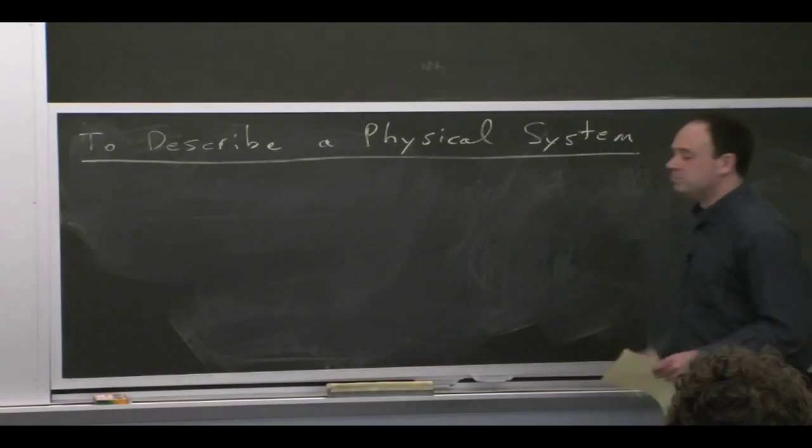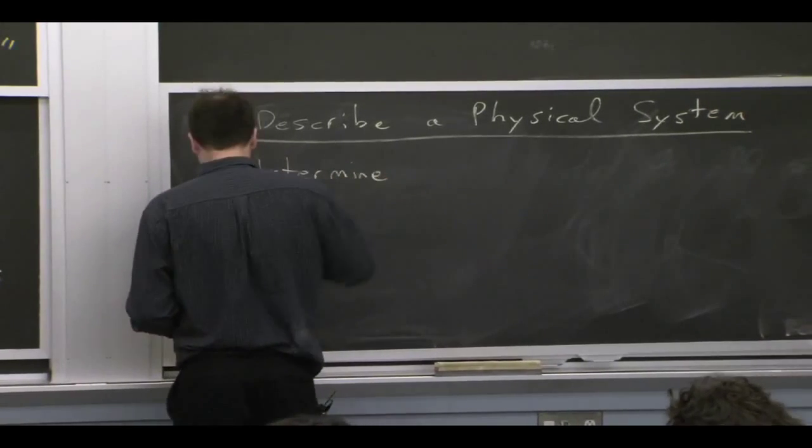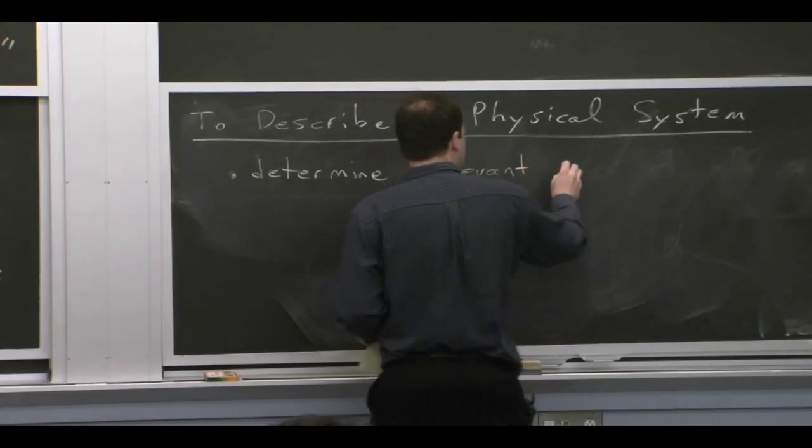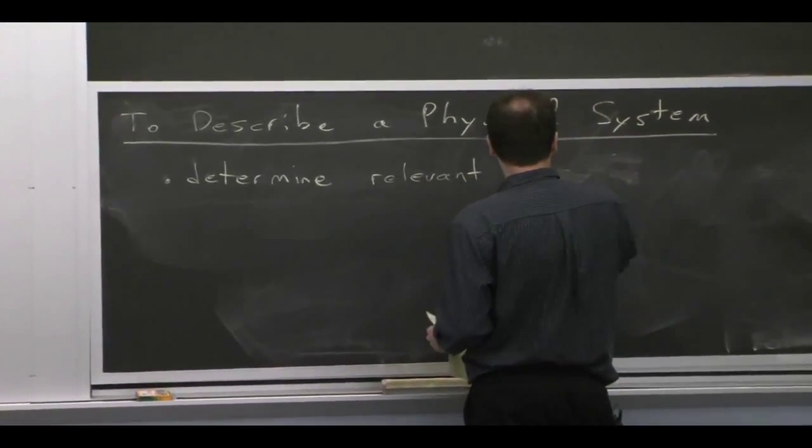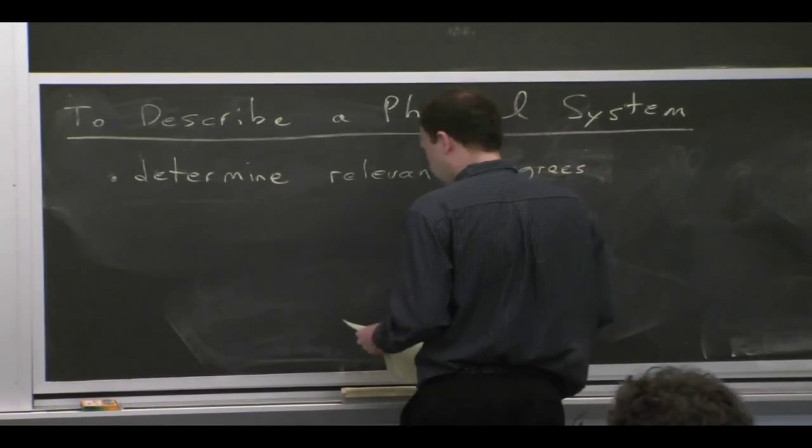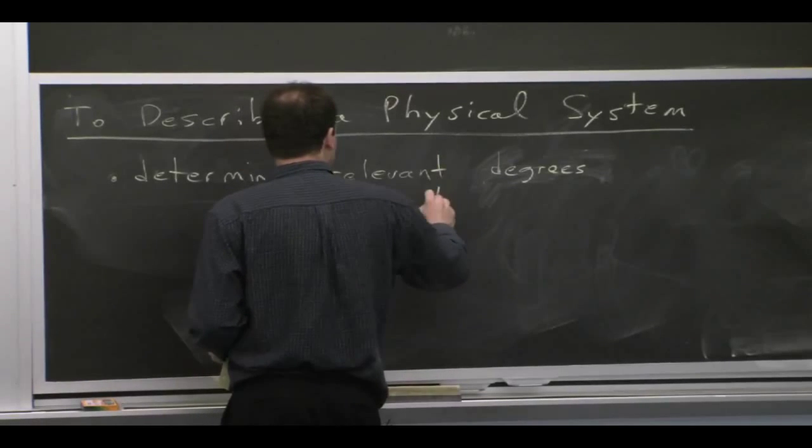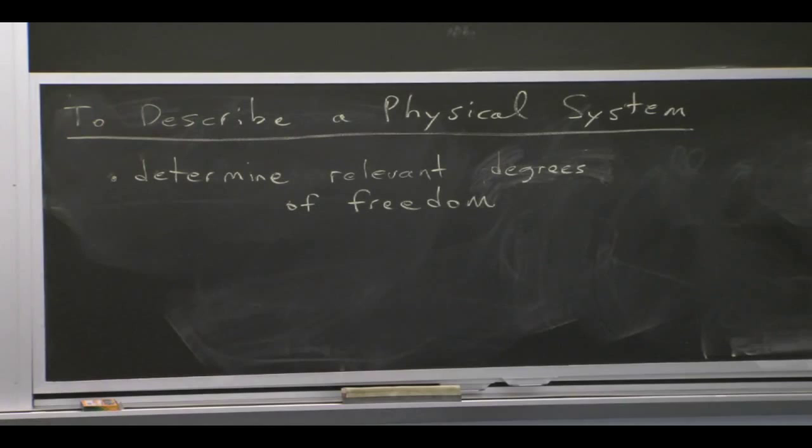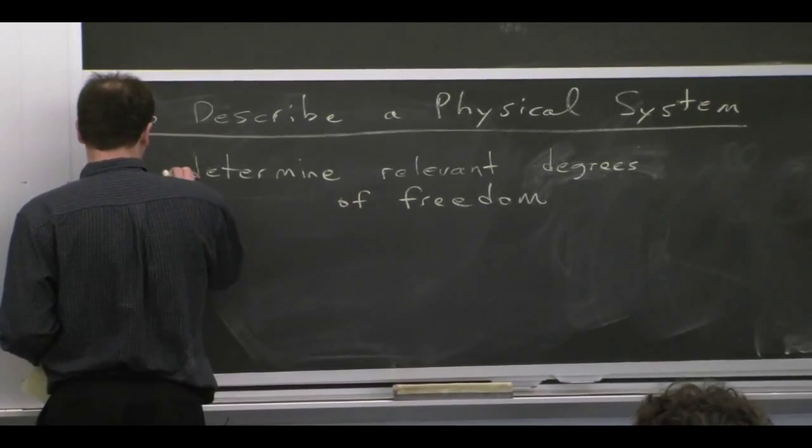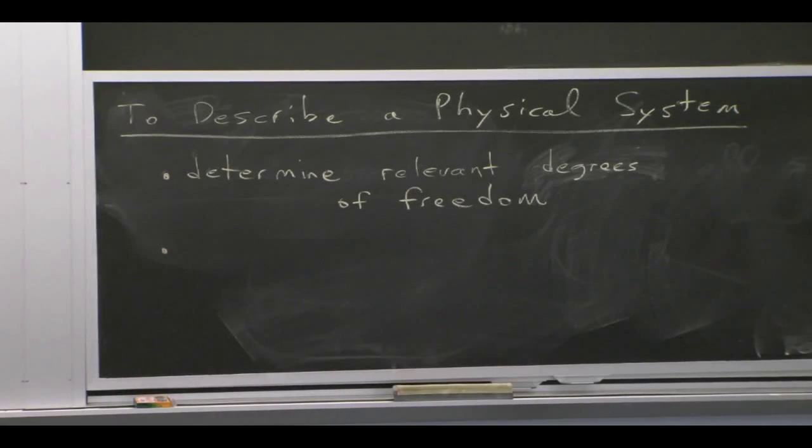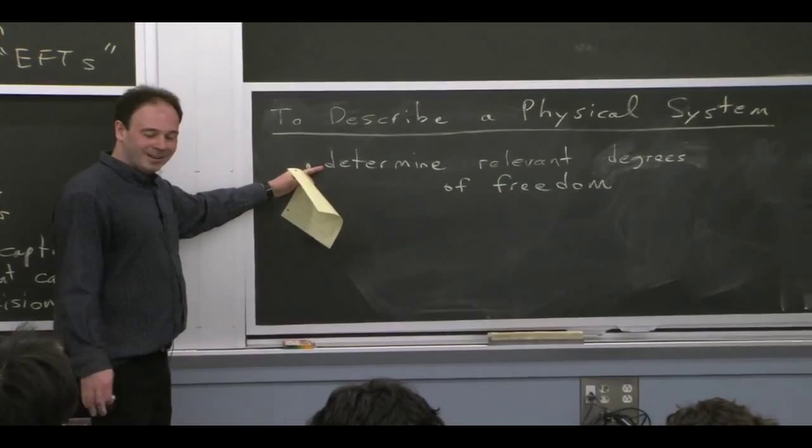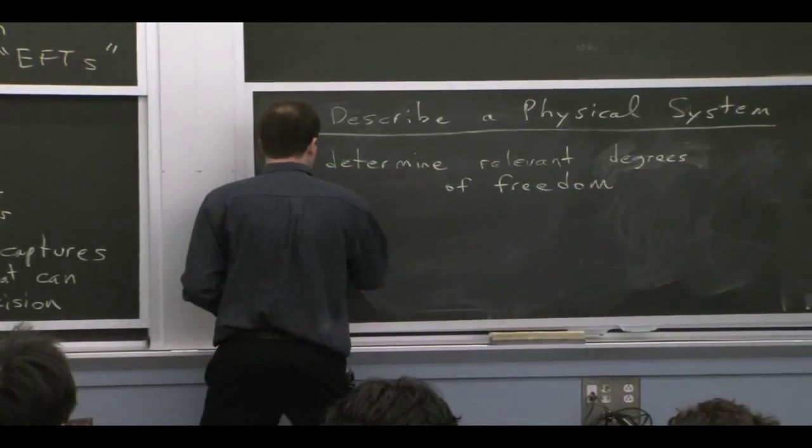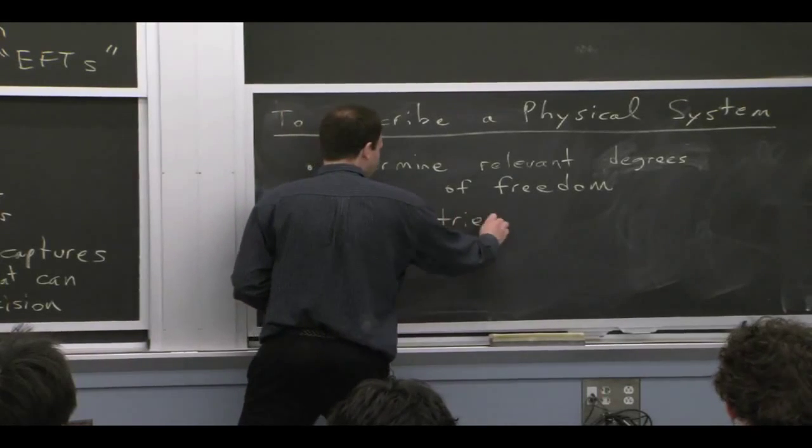What are the steps? So the first thing you need to do is figure out what the relevant degrees of freedom are. What are the things that actually matter for the problem you want to study? Sometimes that is easier than other times. Sometimes it's completely obvious. You want to study some low energy properties of the standard model. You get rid of the heavy particles. You keep the light ones. Fairly straightforward. Other times it may be tricky to actually determine what the relevant degrees of freedom are. And people in the field may even argue about what they are. So we'll talk about examples of both types here throughout the course. So it sounds trivial, but it may not be.